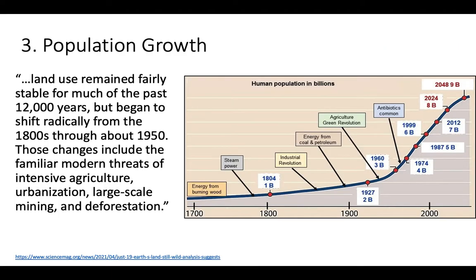The P in HIPCO is population growth. We've talked a lot about how in the last 50 years we've seen exponential growth, expected to reach 11 billion by 2100. That's going to put a large amount of pressure on the world for resources in terms of land and fuel — for agriculture, urbanization, mining, and deforestation. All of those things are going to threaten biodiversity.